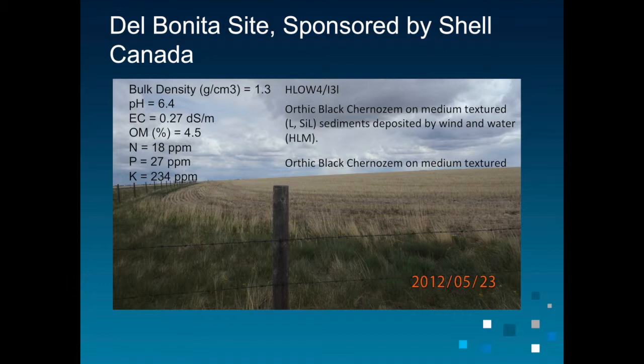What you see on the slide shows the source characteristics of the site: bulk density — no issues, at 1.3; pH — great; EC — no concern. It was a good site to do some fescue restoration.